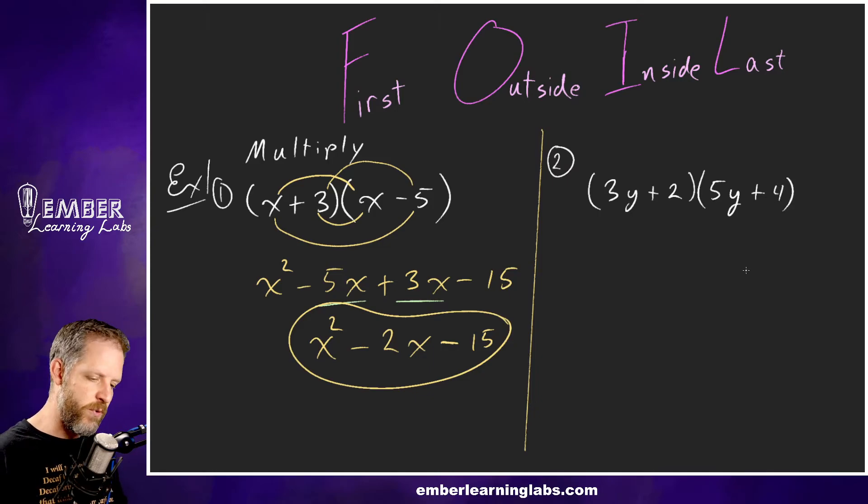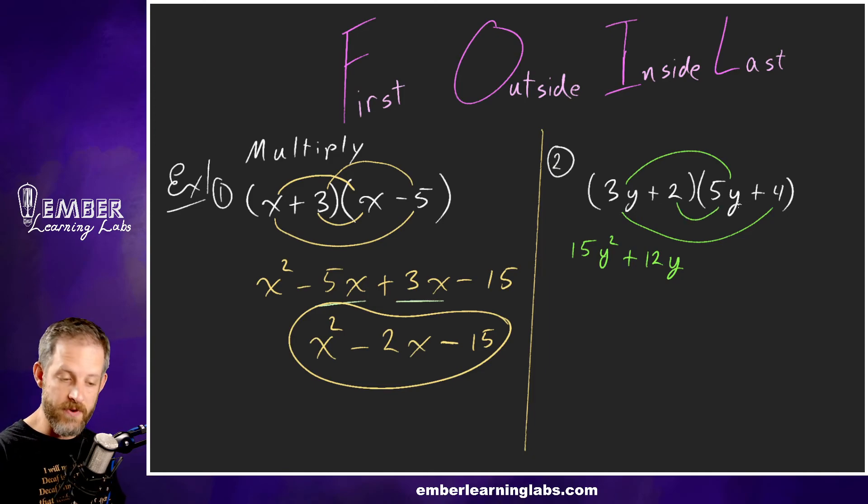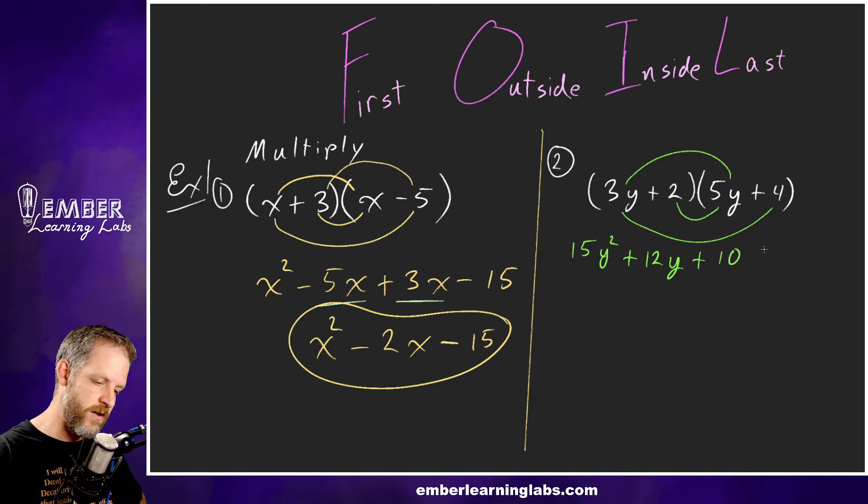So we're going to follow that FOIL method again. We're going to do the firsts: 3y times 5y is 15y². And then the outside: 3y times 4 is 12y, so plus 12y. And then the inside: 2 times 5y, which is 10y, so plus 10y. And then the last: 2 times 4 is 8, so plus 8.